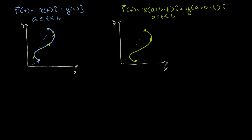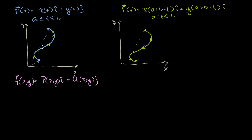When t equals b, you put that in and get x(a) and y(a) — the b's cancel out — so you point back to the start. These two paths have the same shape but go in the exact opposite direction. Now let's see what happens when we have some vector field f(x,y) = p(x,y)i + q(x,y)j — a vector field over the xy-plane — and how the line integral of this vector field over one path compares to the line integral over the other.